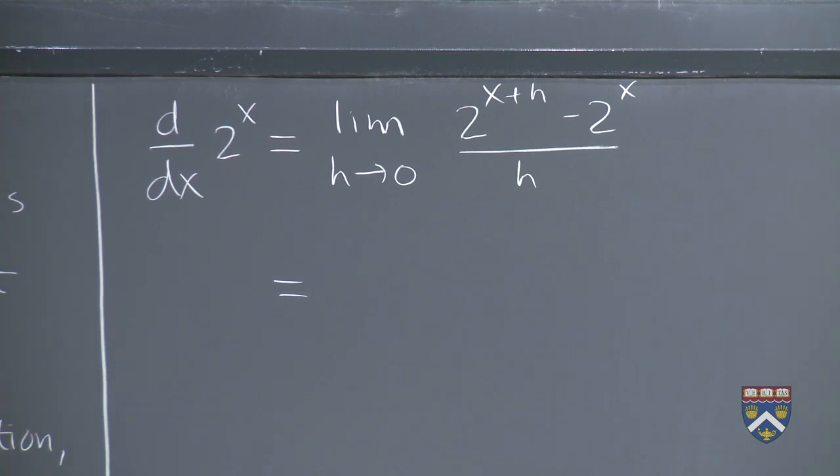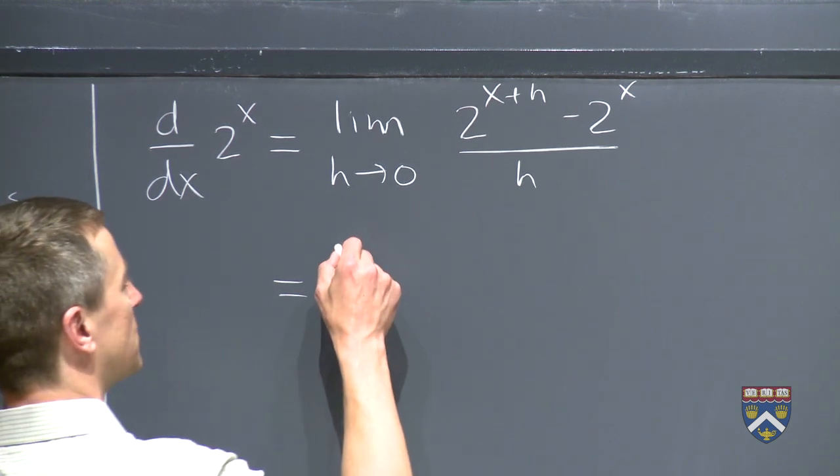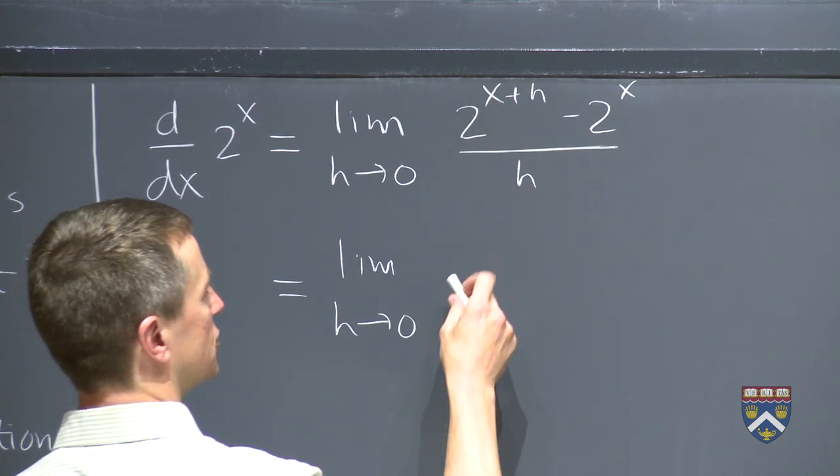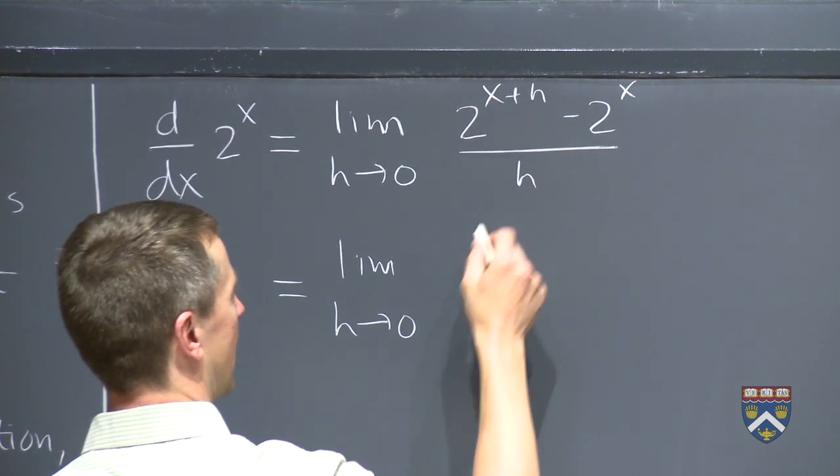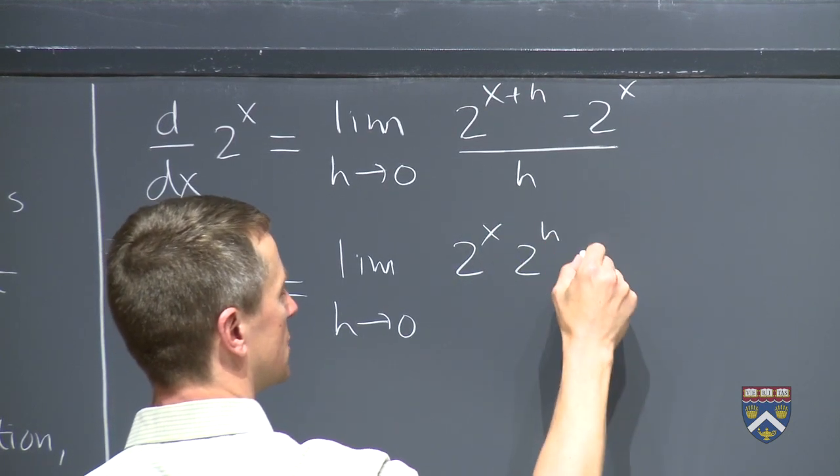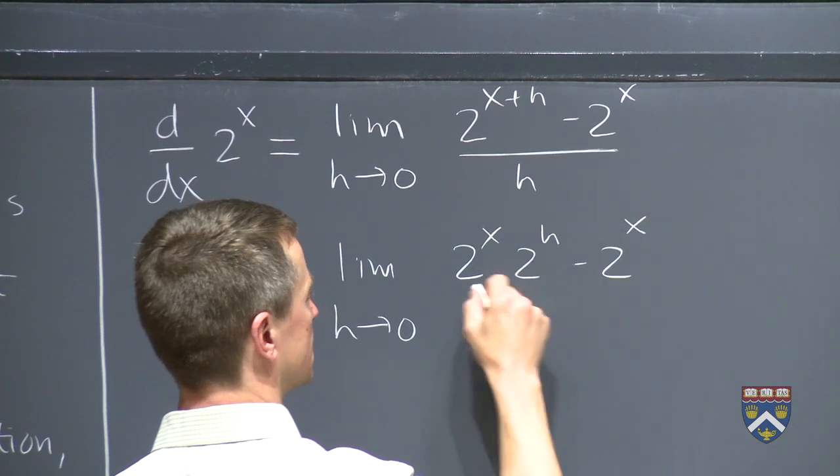And just as with the other examples, now we try to simplify this any way we can. We've got an exponent rule from the very first week that can help us out a little bit here, because we can rewrite 2 to the x plus h as 2 to the x times 2 to the h, minus that 2 to the x.